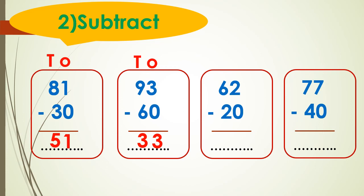Here we have 62 minus 20. First, write ones and tens. Then start subtracting by ones: 2 minus 0 equals 2, so I write 2 in the ones place. Now look at the tens: 6 minus 2 equals 4, so I write 4 in the tens place.